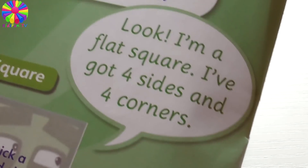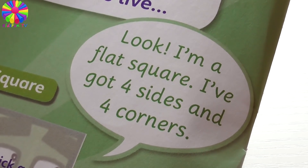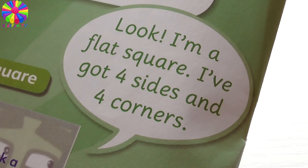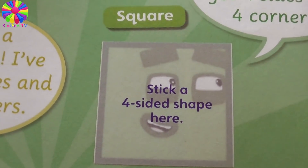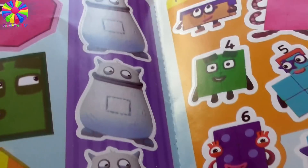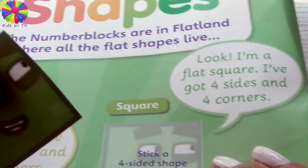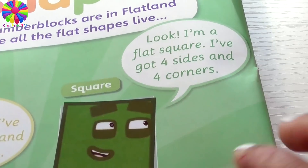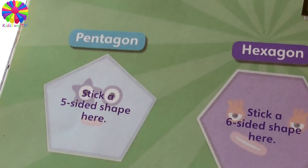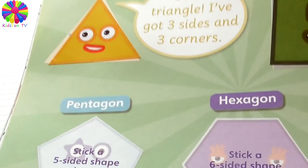Next one — guess again! 'I'm a flat square — I've got four sides and four corners.' Which Numberblock is it? It's Numberblock Four! So now we're going to stick the shape with four sides and four corners. It's a square — a square has four sides and four corners.